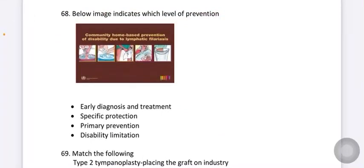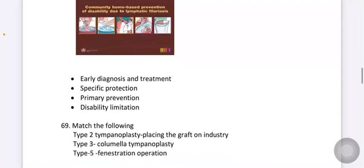Below image indicates which level of prevention. Here the similar image is given which indicates the community-based prevention of disability due to lymphatic filariasis. Options given are early diagnosis and treatment, specific protection, primary prevention, and disability limitation. The answer here is disability limitation.